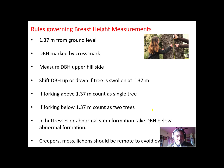Some trees develop buttresses, similar to a swollen tree — you can conveniently adjust above the buttress formation and take the diameter. Sometimes there are creepers, moss, or lichens over the tree which may overestimate the diameter or girth, so you need to take care of that.